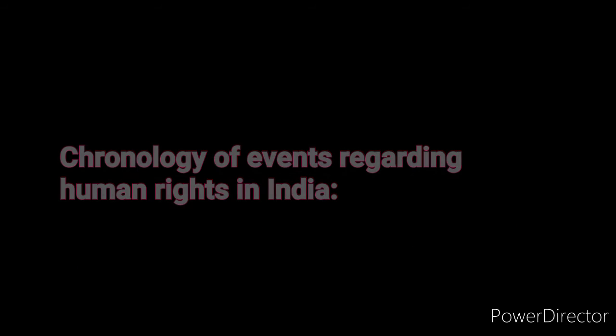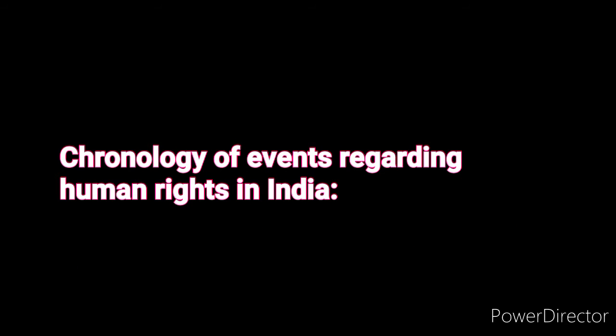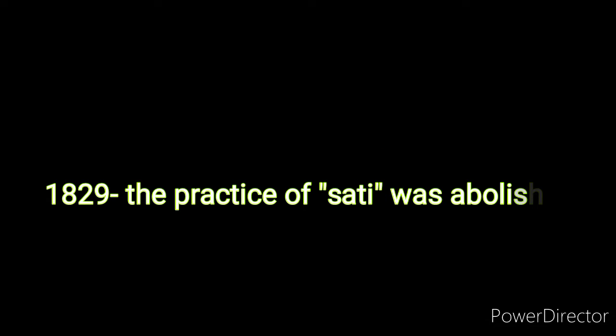If you see the chronology of events regarding human rights in India, in the year 1829, the practice of Sati was abolished by Governor General William Bentinck after years of campaigning against it. In 1929, the Child Marriage Restraint Act was passed to prohibit marriage of minors under 14 years of age.